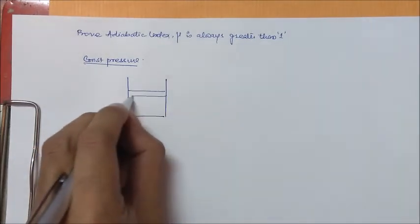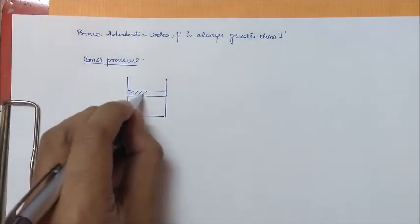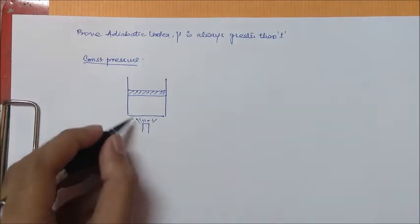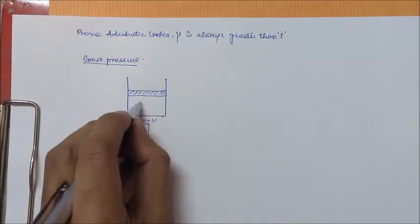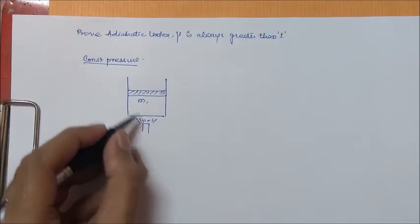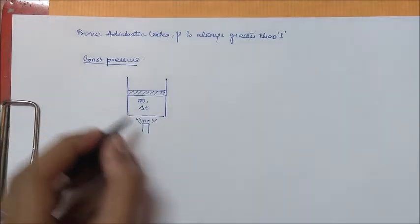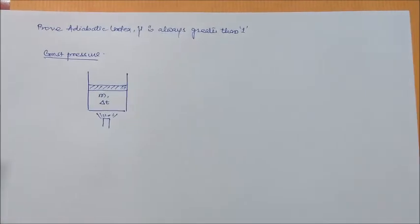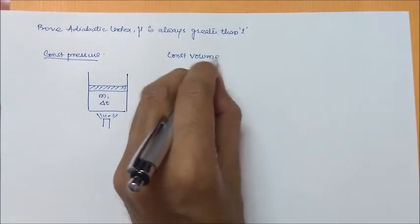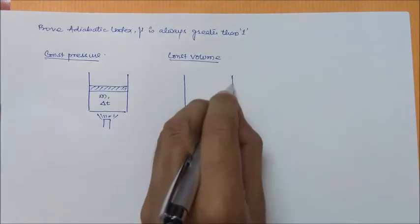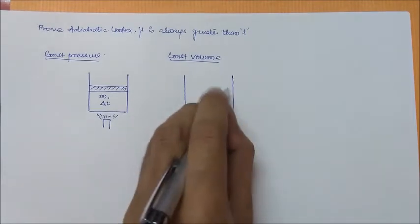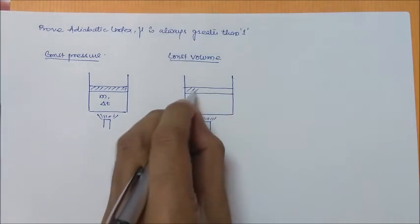For Case 1, constant pressure: this process can be represented by a piston-cylinder arrangement. There is a Bunsen burner from which heat is given to the gas inside the cylinder. Suppose the gas has a mass m, and due to this heat transfer there is a temperature difference of delta T.